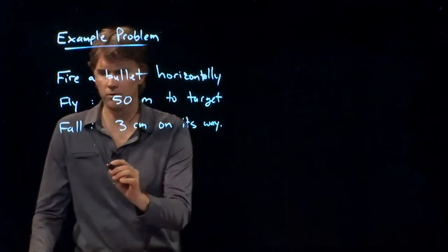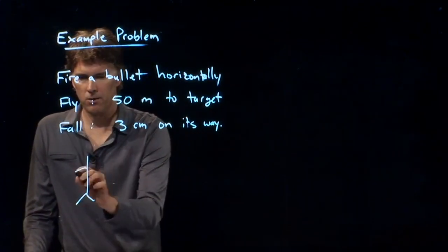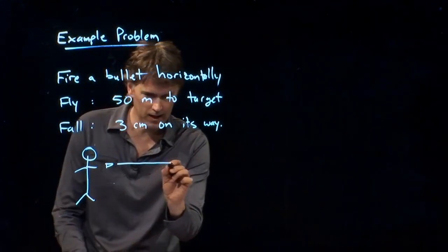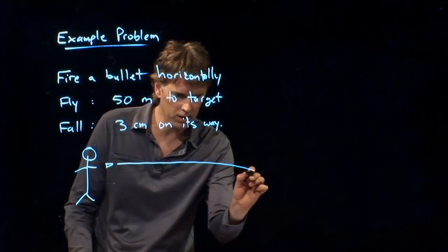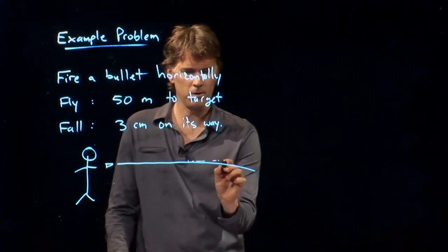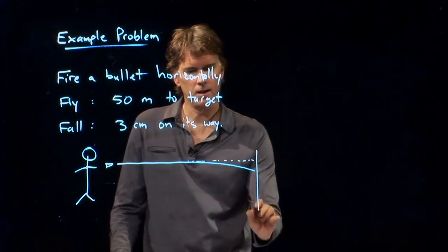So let's draw what this looks like. Here you are, you've got your bullet that is launched horizontally, and it's just gonna fall a little bit. So if we continue that horizontal line, it would look like that.